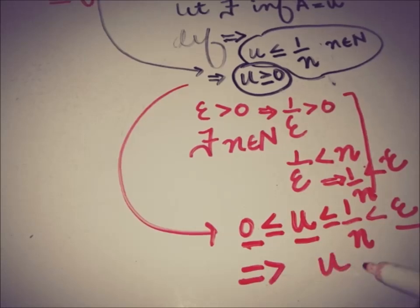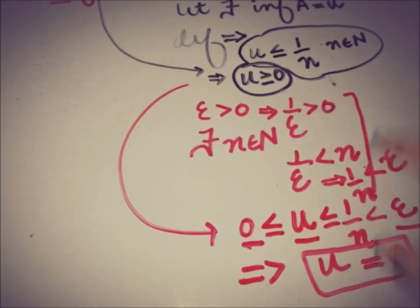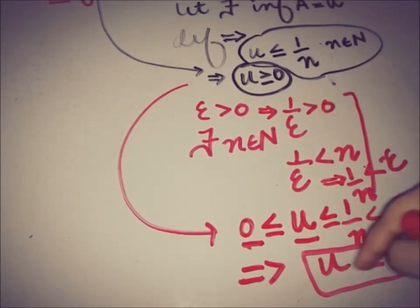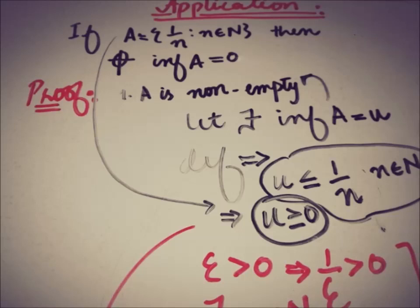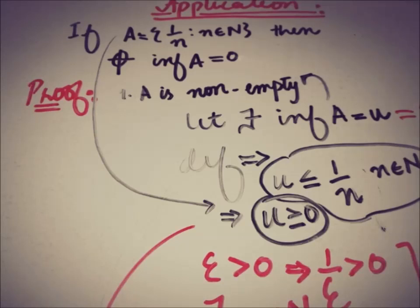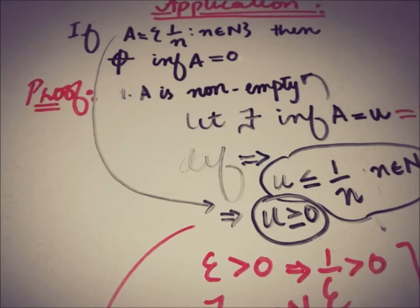This implies that u must be equal to 0. So the infimum of A, which we called u, is equal to 0. We have proved that the infimum of the set A = {1/n : n ∈ ℕ} is 0. This is a very important application of the Archimedean property, and it can similarly be applied to other sets regarding supremum or infimum.